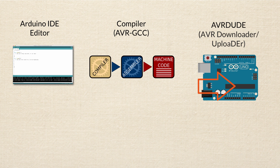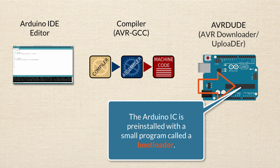What AVRDUDE does is send the file to the Arduino's integrated circuit. Normally we would have to use some external hardware to load that integrated circuit, but what Arduino has done in their wisdom is load a small piece of software onto the integrated circuit that comes with every Arduino board. That piece of software is called a bootloader. The bootloader works with AVRDUDE to take that outputted hex file and put it onto the flash memory of the Arduino's integrated circuit using only the USB cable. And again, all we have to do is press the Upload button — the whole process happens behind the scenes.